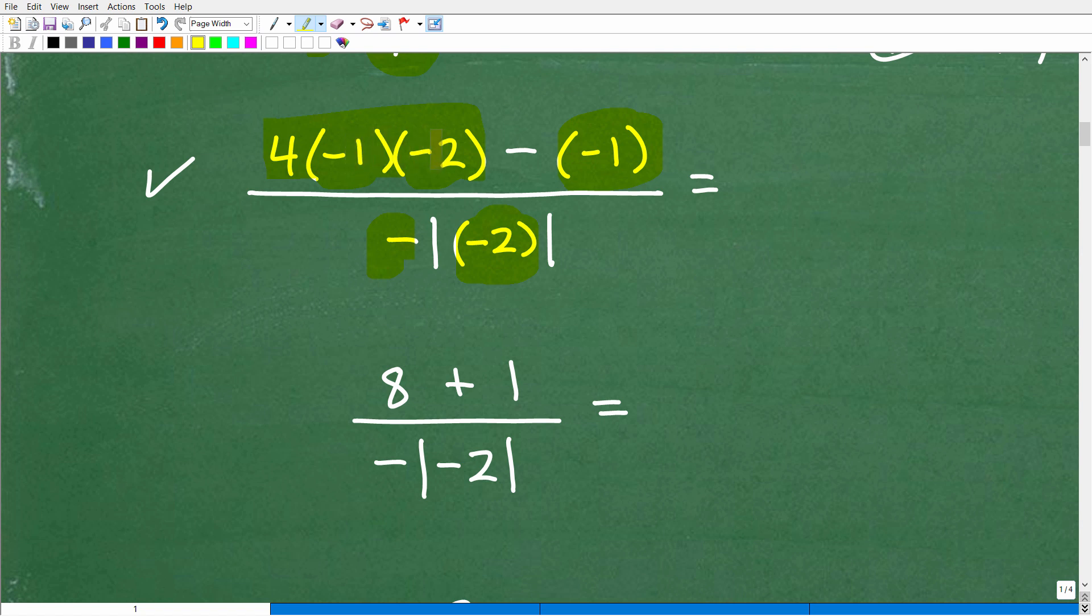So, 4 times negative 1 times negative 2. Negative times negative is going to be a positive. So, negative 1 times negative 2, positive 2. So, 2 times 4 is 8. At this point, right here, this is going to be interesting. If you didn't plug in this value of negative 1, this x right here for negative 1, without parentheses, this could cause a lot of confusion.